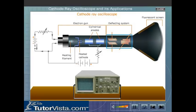The deflecting system consists of two pairs of plates, X and Y. The Y plates are placed horizontally to bring about vertical deflection. The X plates are placed vertically to bring about horizontal deflection.